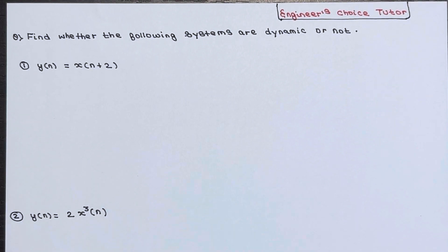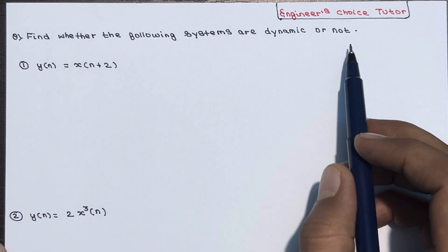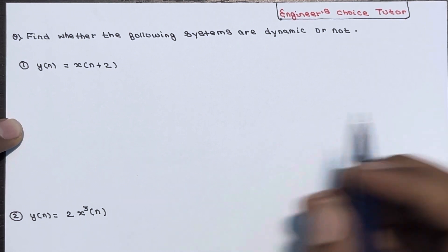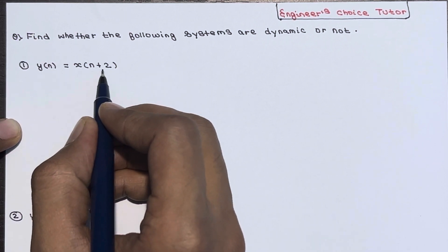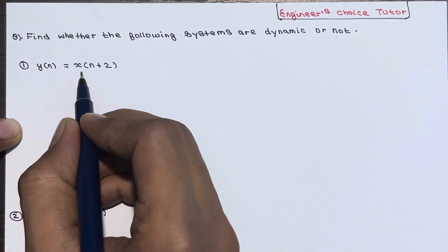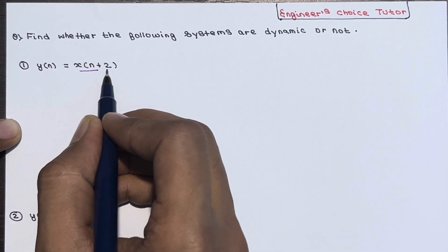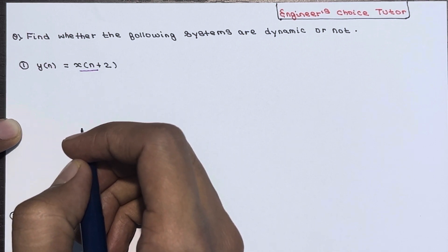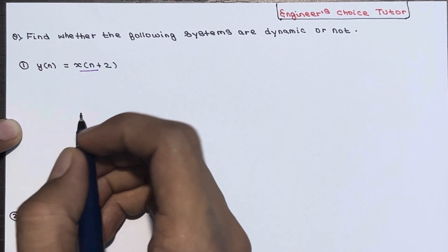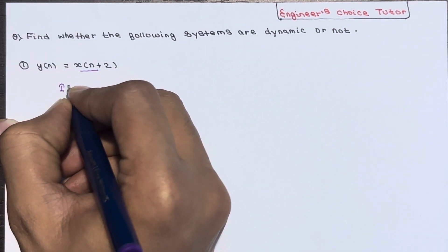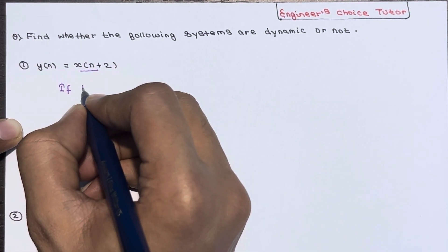Hi everyone, in this lecture we will see a problem based on dynamic or static systems. The question is: find whether the following systems are dynamic or not. The equation is given as y(n) = x(n+2). If you see here, n plus 2 means the output depends upon the future value of input. Therefore you can say that this system is a dynamic system.